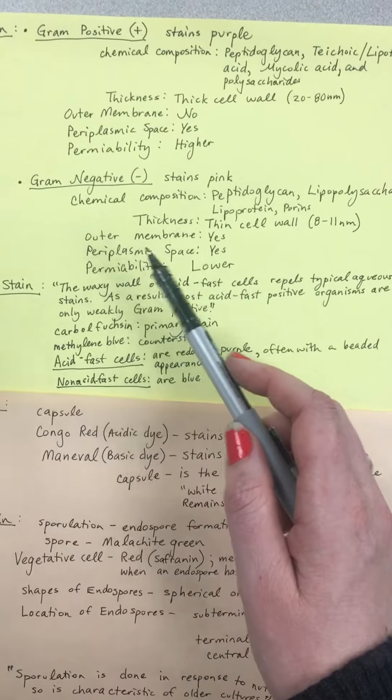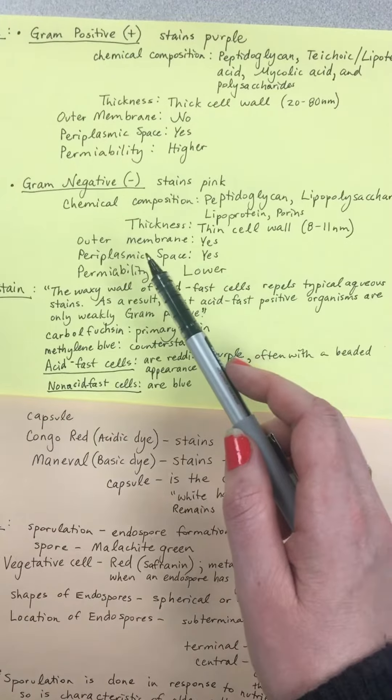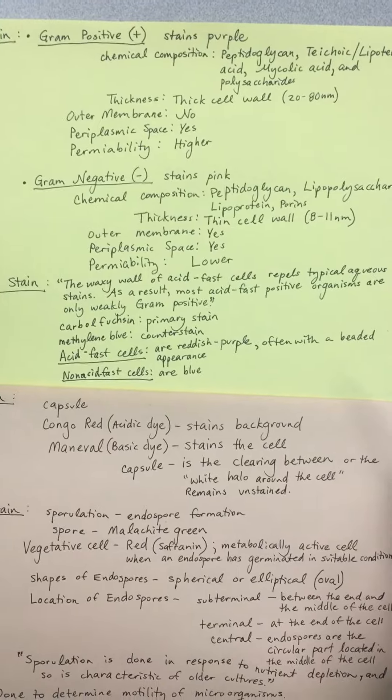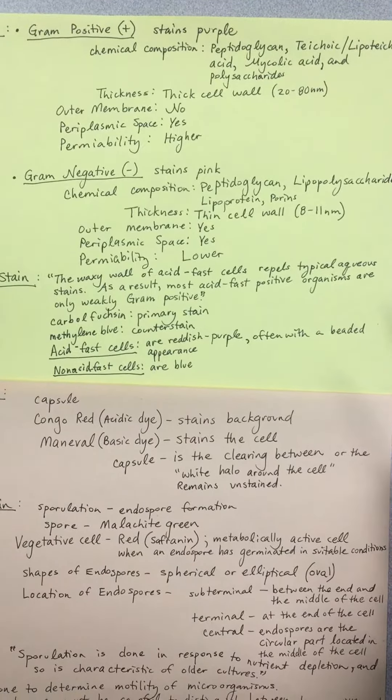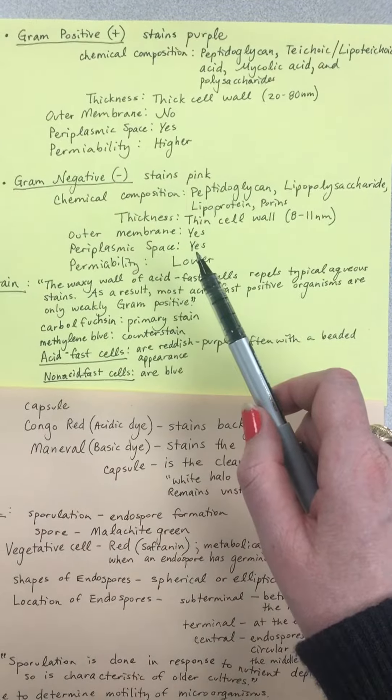Why? Because this outer fatty membrane is not very permeable and it likes to block substances. It also means your gram-negative bacteria are typically harder to kill and you need different antibiotics to kill them. It also has a periplasmic space with enzymes.